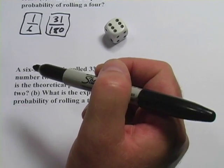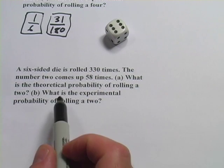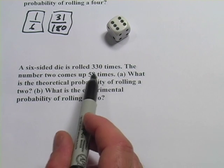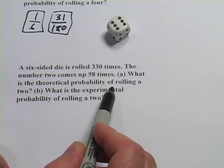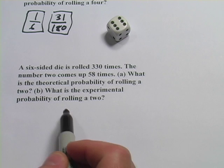Let's look at one more here. This one says a six-sided die is rolled 330 times. The number two comes up 58 times. What's the theoretical probability of rolling a two, and what's the experimental probability?